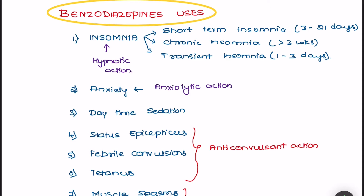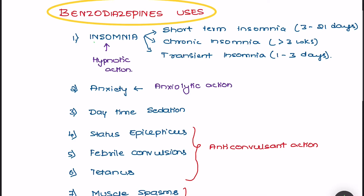First, they are most commonly used in the treatment of insomnia because of their hypnotic actions. It can be used in case of short-term insomnias, chronic insomnias, as well as transient insomnias. Short-term insomnia covers patients suffering from lack of sleep between 3 to 21 days, chronic insomnia for more than 3 weeks, and transient insomnia involves sleep disturbance between 1 to 3 days.